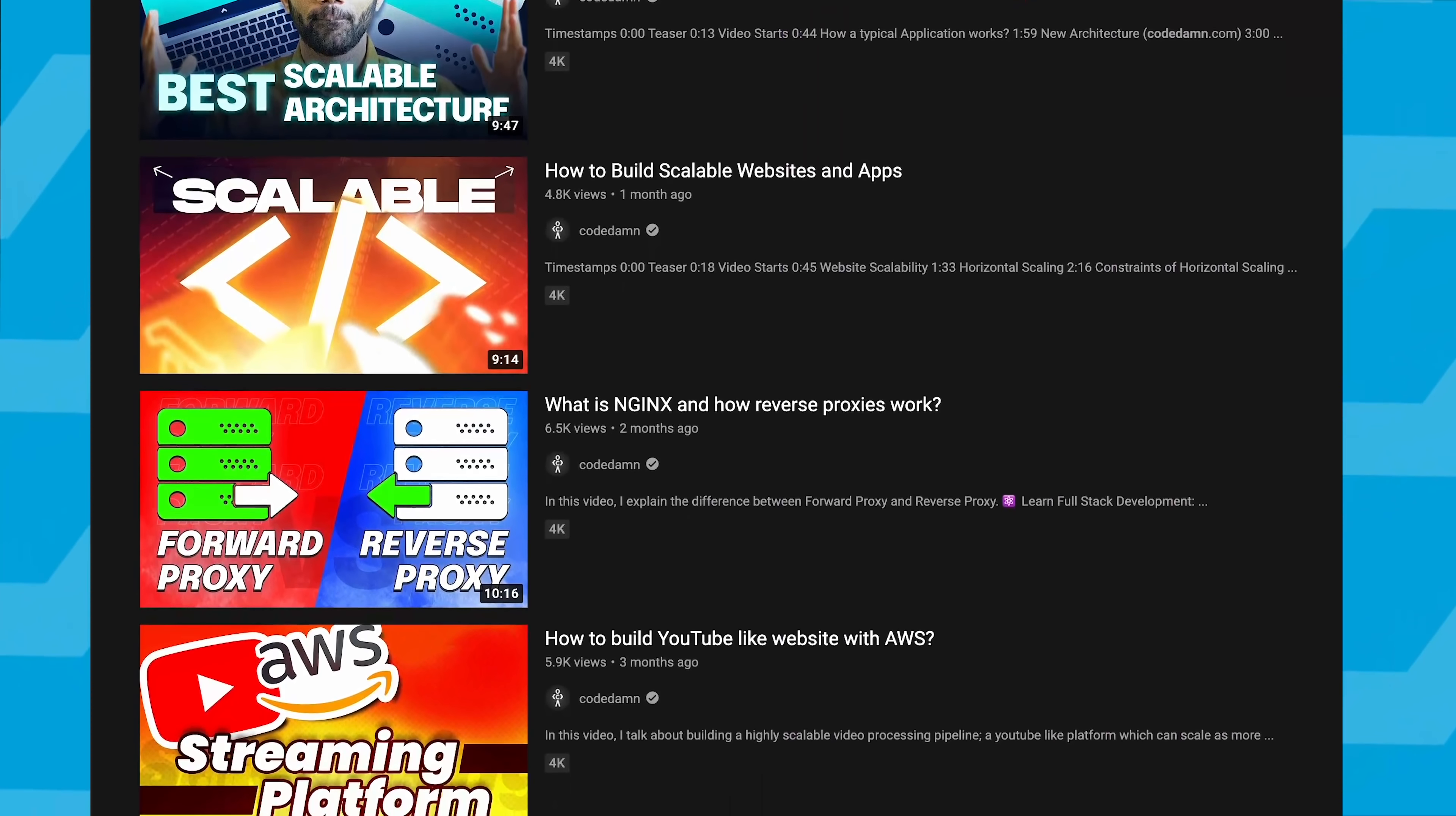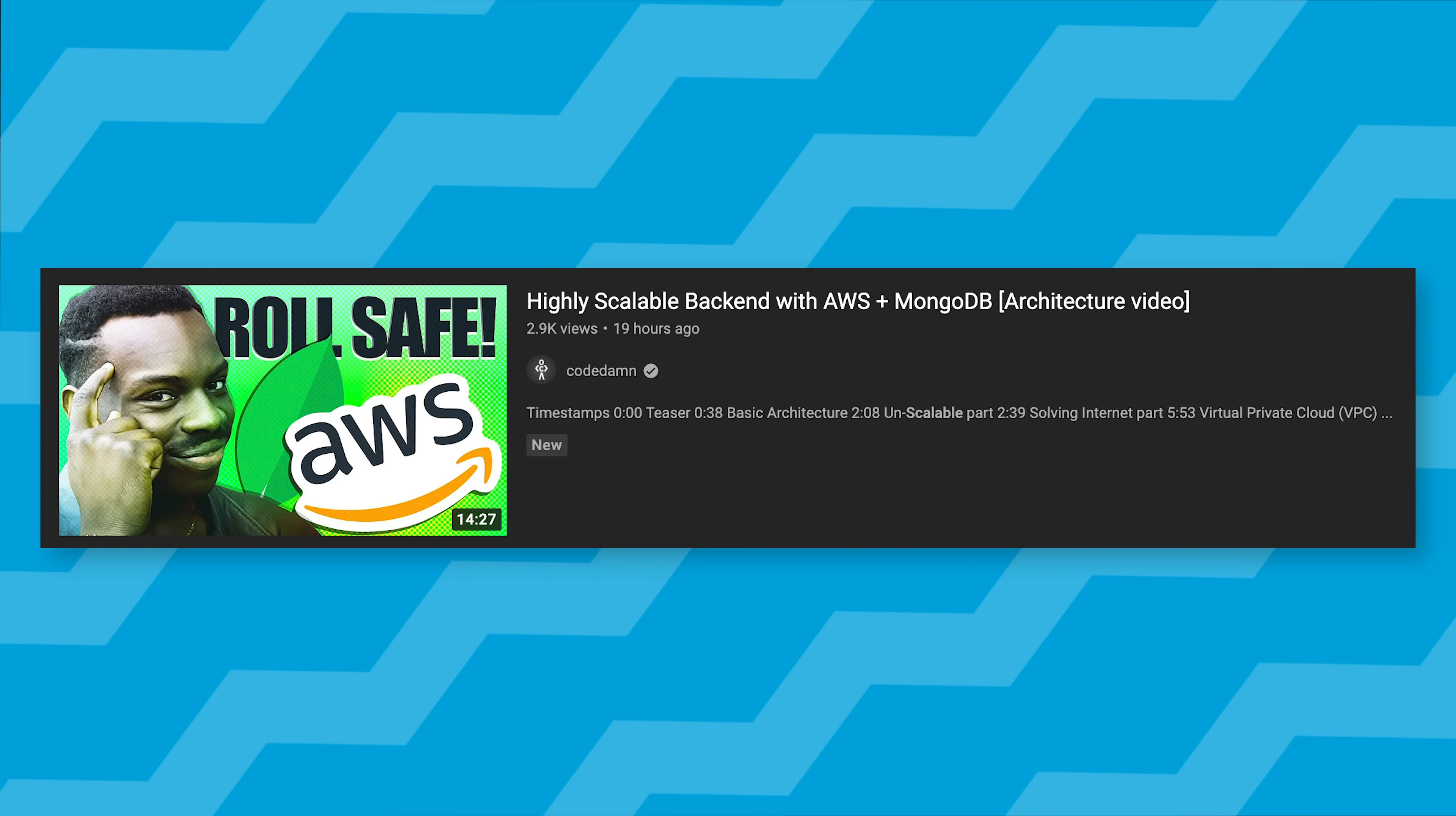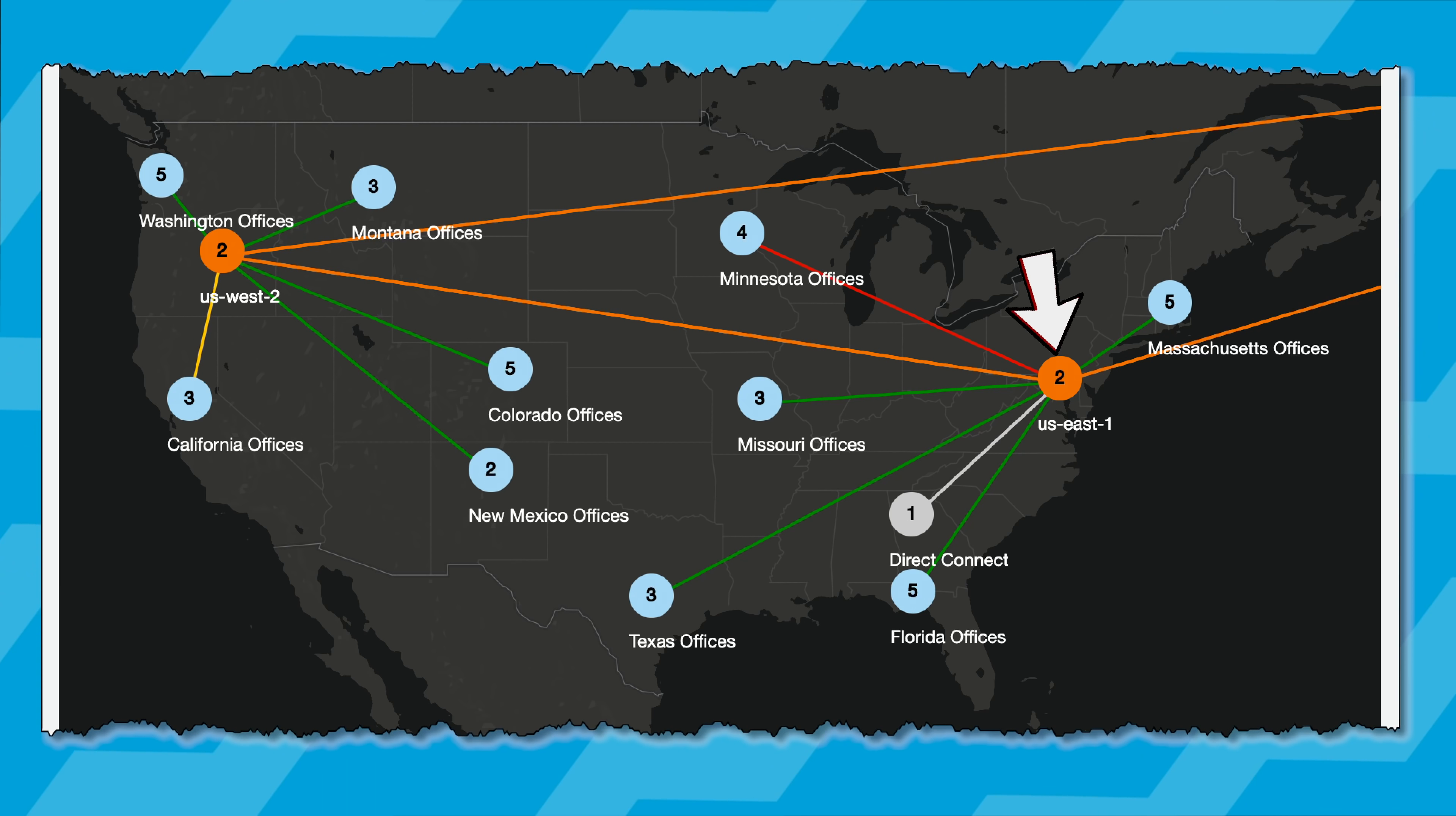I have done countless videos on Codedam's infrastructure, but just to revise again very quickly, Codedam has two parts: the front end which is in Next.js, the back end which is in GraphQL, and the back end has a database on MongoDB Atlas. Even in the last video on how to create a scalable backend architecture, we discussed that Codedam's backend architecture is inside a VPC.